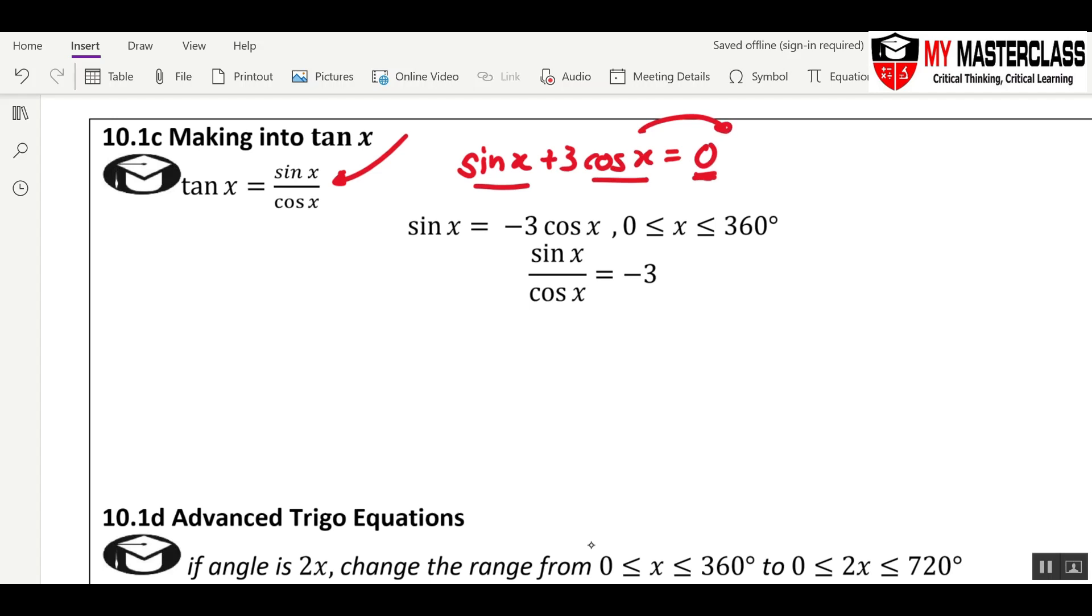First, we bring the 3cosine x to the right side, so you will have negative 3cos x over here. Now, you divide the cosine x over, you will get sine x over cosine x equals negative 3. That means tangent x equals negative 3.